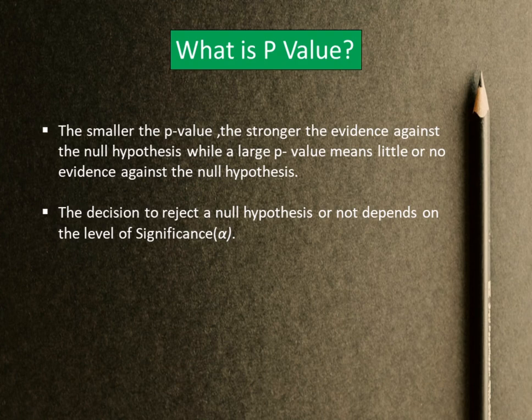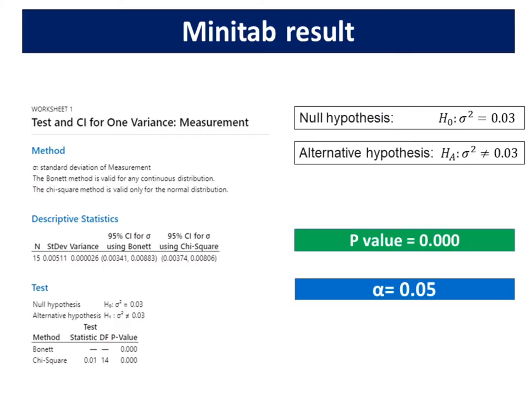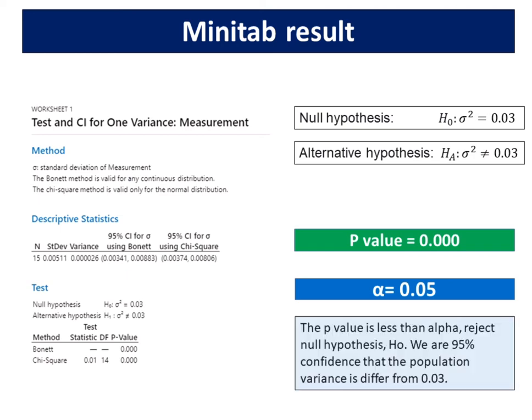The decision to reject a null hypothesis or not depends on the level of significance alpha. If p-value less than alpha, reject null hypothesis. If p-value greater than alpha, fail to reject null hypothesis. The level of significance used is 0.05. If the p-value is less than or equal to the significance level, the decision is to reject the null hypothesis.